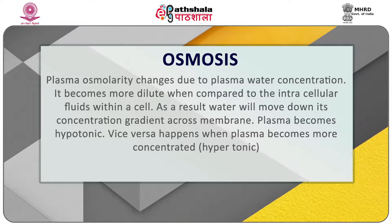In the RBC cell, we can see the physiological mediums and their effects pertaining to hypo, hyper and isotonic mediums. Plasma osmolarity changes due to plasma water concentration. It becomes more dilute when compared to intracellular fluids within a cell. As a result, water will move down its concentration gradient across membranes and plasma becomes hypotonic. Vice versa happens when plasma becomes more concentrated and hypertonic. For an RBC, 0.9% sodium chloride solution, which is normal physiological saline, is isotonic.